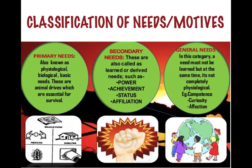There is another category of needs which might not be learned, and at the same time is not completely physiological in nature. These are general needs and could include competence, curiosity, and affection. A human being tries to fulfill all these types of needs in order to motivate himself or herself.